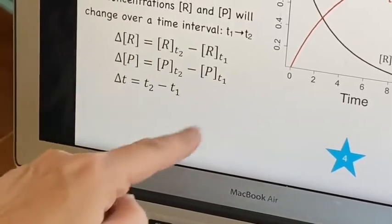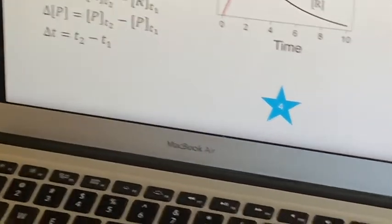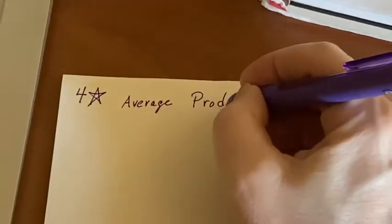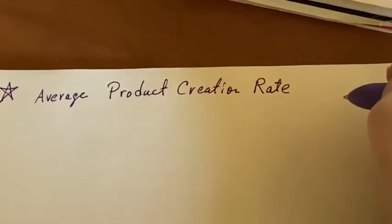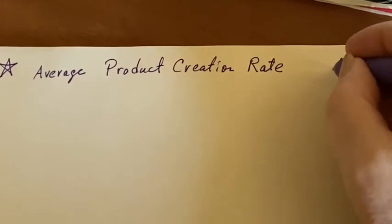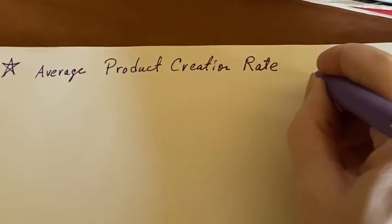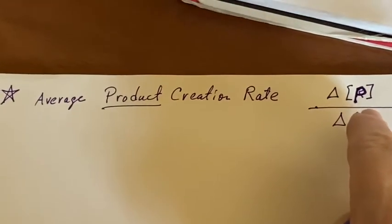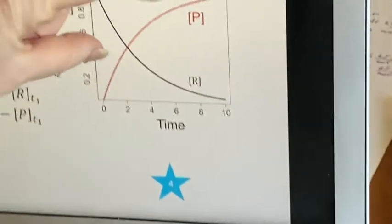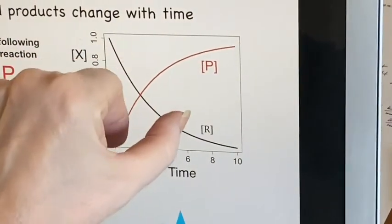But if we're going to do it as a discrete sort of thing, we would have an average product creation rate. We would be able to figure out what that was simply by taking the change in concentration of P over delta T. It is coming into existence and it's going to be the change over the amount of time.